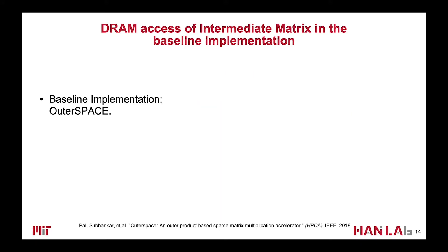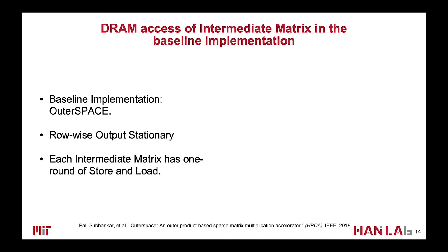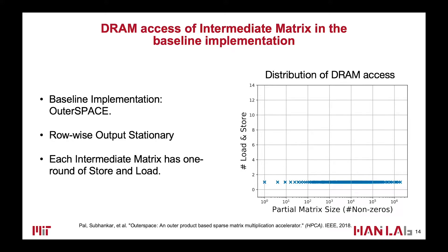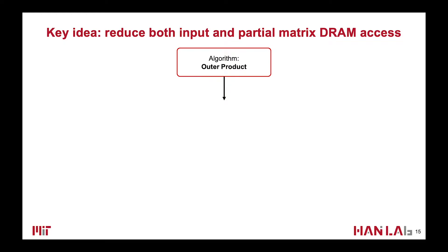The previous state-of-the-art accelerator, called OuterSpace, optimized the partial matrix DRAM access with a row-wise outer-output stationary dataflow. They first compute partial matrices and store them to DRAM, then fetch the same row from all partial matrices and merge them before going to the next row. Therefore, each of the partial matrices only needs to be stored and loaded exactly once from DRAM. Although the prior state-of-the-art only requires one round of store and fetch of the partial matrices, it is still a heavy burden and makes the system bounded by memory bandwidth.